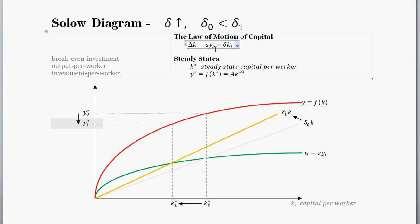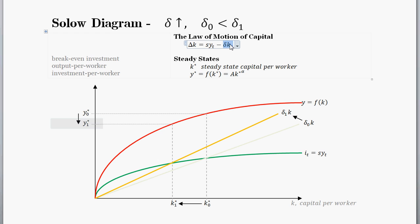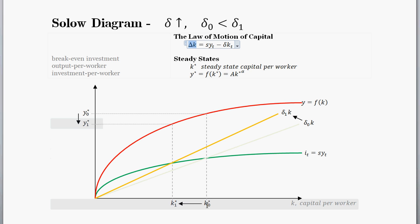Let's look at the time series charts to see how things evolve. We were at this level of capital, and then depreciation jumps up. Starting on this level of the break-even investment line, the yellow line is right here for that capital, but the investment line is down there. So break-even investment is above actual investment. This means delta K is going to be negative, because the law of motion of capital is ruled by the difference between investment and depreciation. Since depreciation given that amount of capital is greater than investment, capital is going to decrease.